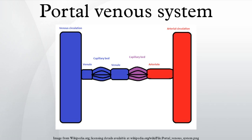The portal vein is formed by the union of the superior mesenteric vein and the splenic vein posterior to the neck of the pancreas at the level of vertebral body L1.